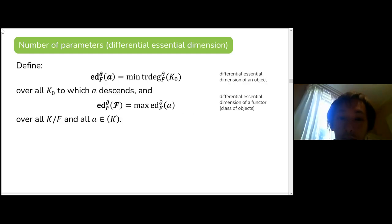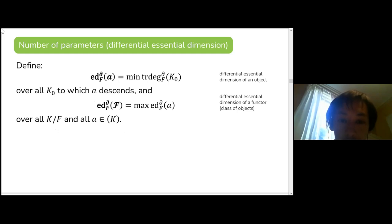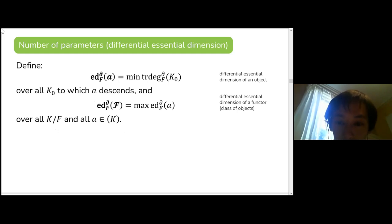The differential essential dimension of an object is the minimum of the differential transcendence degree of the field that it descends to. The differential essential dimension of the functor — which we think of as the class of objects — is the maximum of the differential essential dimensions of all its objects over all fields K.